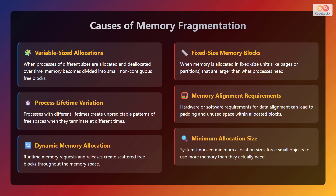Runtime memory requests and releases create scattered free blocks throughout the memory space. Now let us look at the causes of internal fragmentation. One reason is fixed size memory blocks, when memory is allocated in fixed sized units, like pages or partitions, that are larger than what processes need. The other reason is memory alignment requirements. Hardware or software requirements for data alignment can lead to padding and unused space within allocated blocks. The other reason is minimum allocation size. System-imposed minimum allocation sizes force small objects to use more memory than they actually need.